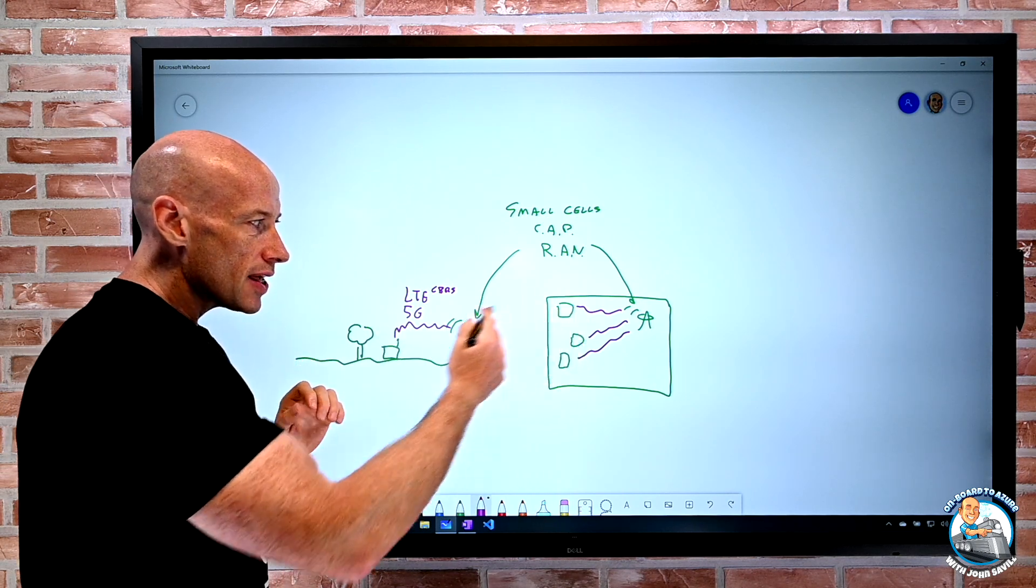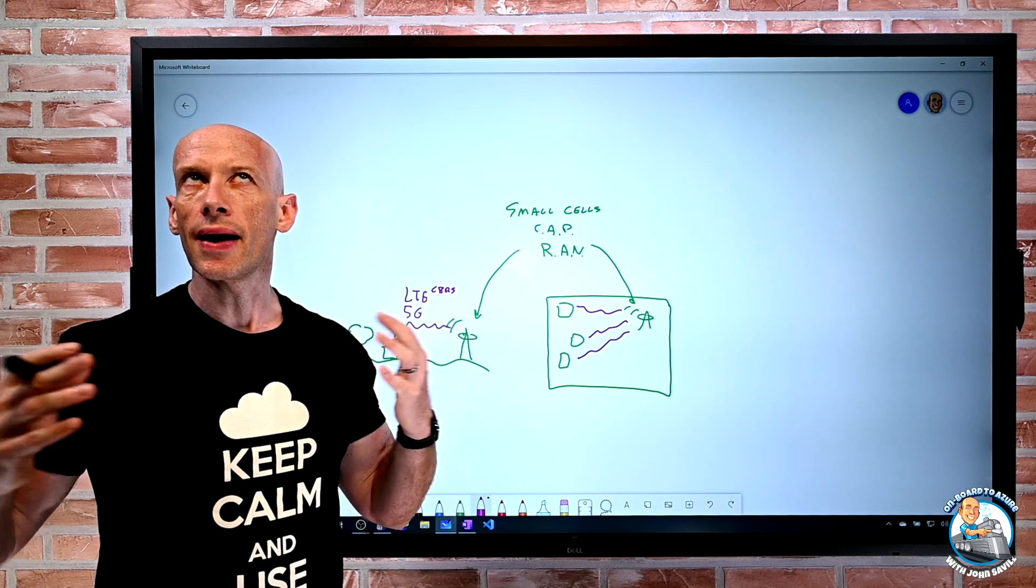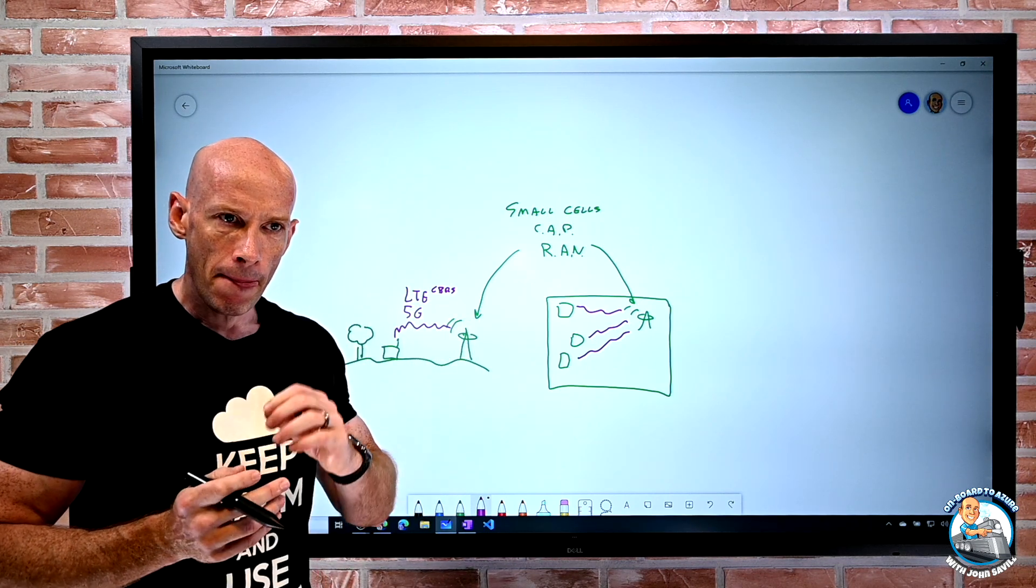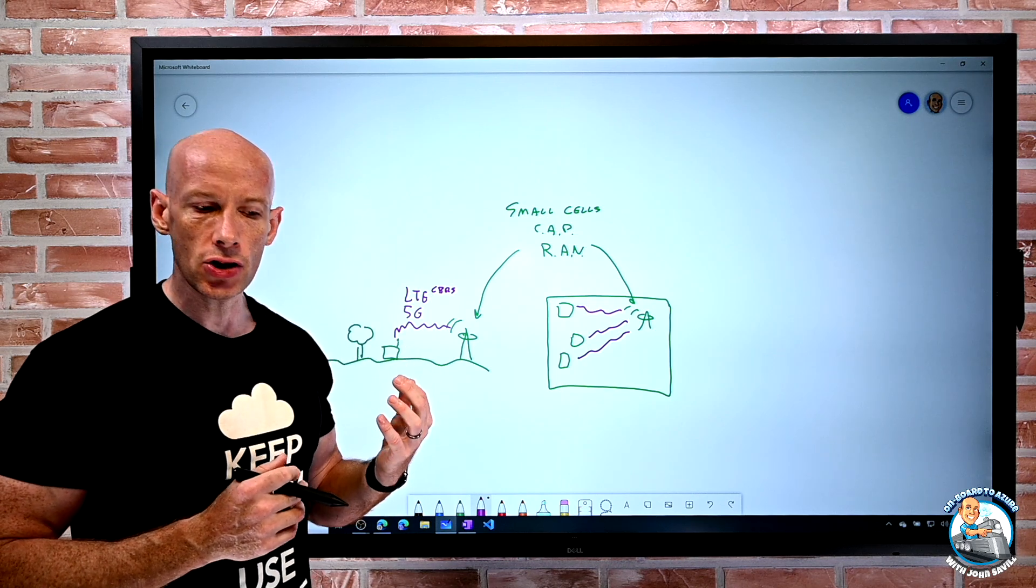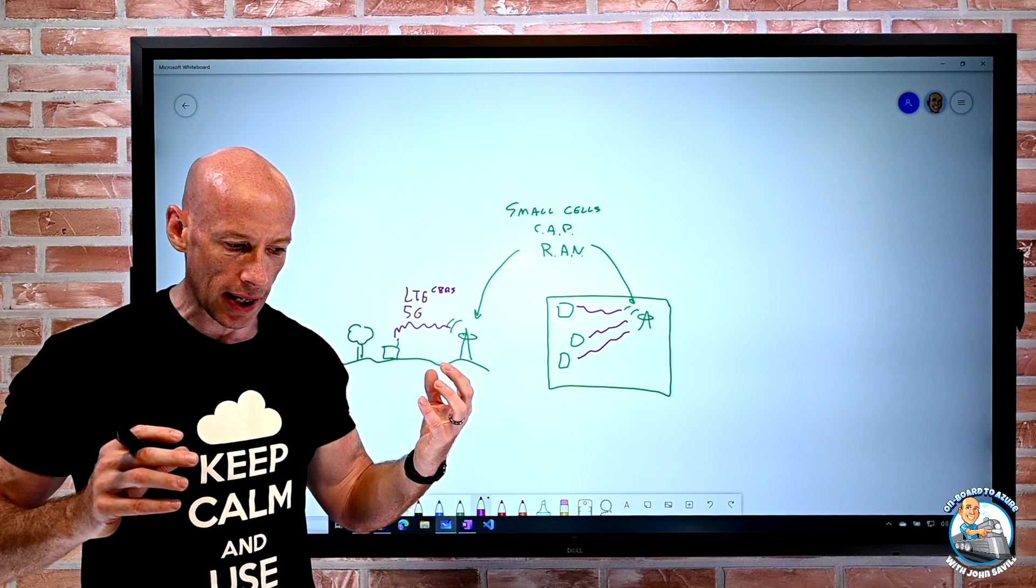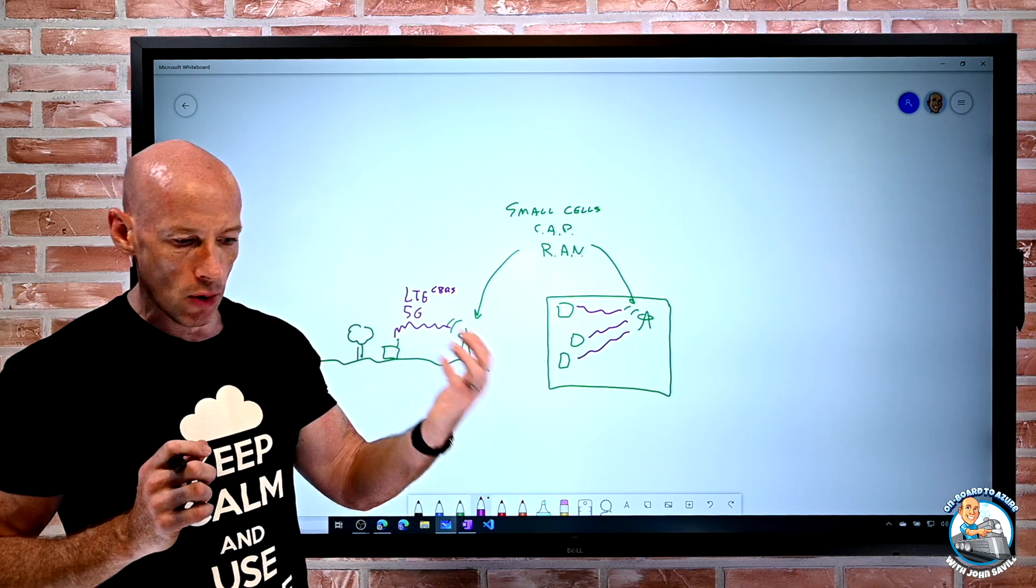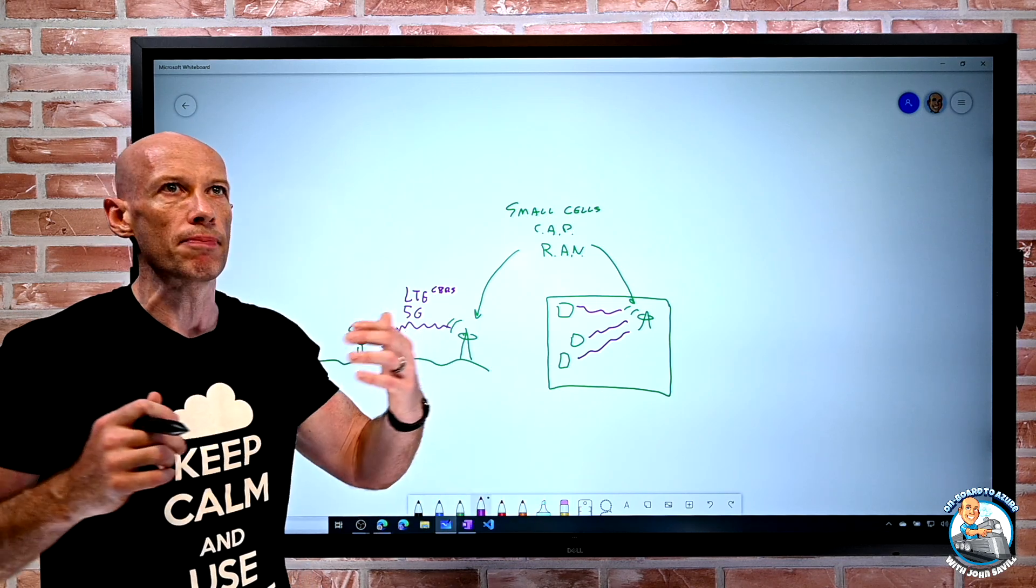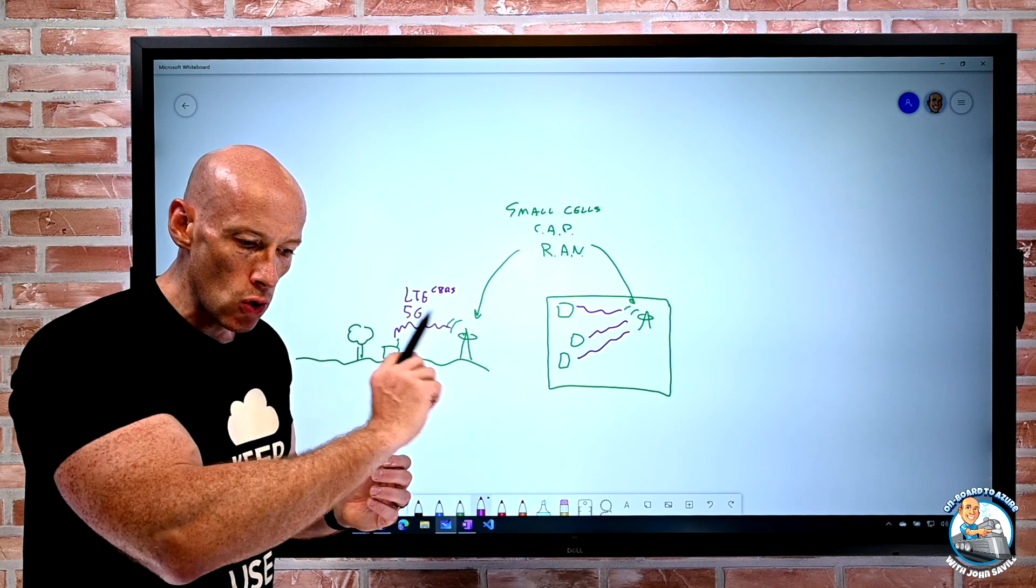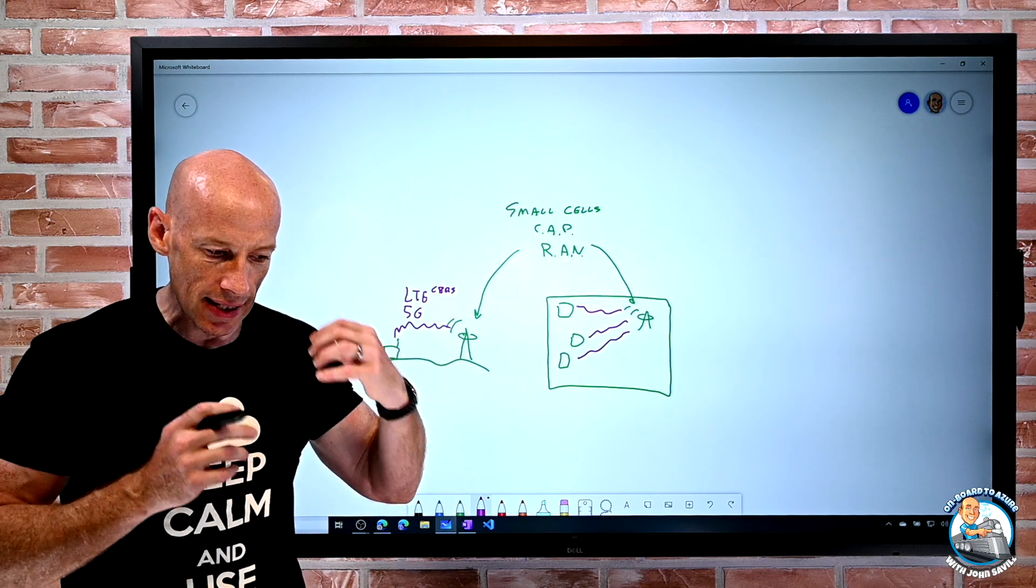So we have these components. Now for a regular public 5G network or LTE network, we have a whole bunch of network functions to make that work. I can think about there's a control plane with a whole bunch of different services, authentication, network exposure, service discovery, policy. Then there's the user plane, actually services for moving packets, actually making the data work.